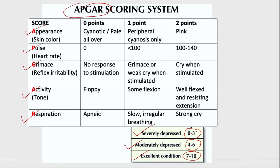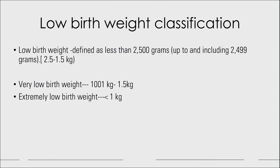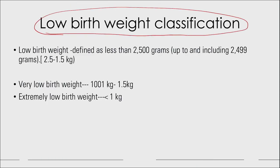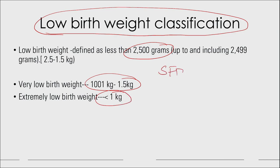Regarding low birth weight classification: any child with birth weight less than 2,500 grams (2.5 kg) is considered low birth weight. This can be divided into very low birth weight (1 kg to 1.5 kg) and extremely low birth weight (less than 1 kg). When the baby is at term, these are called small for dates or small for gestational age babies.